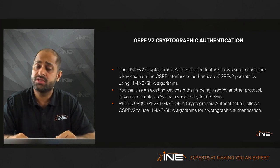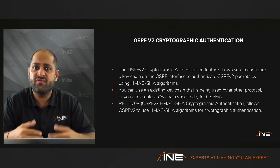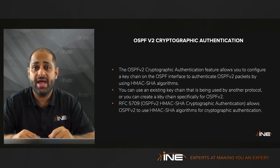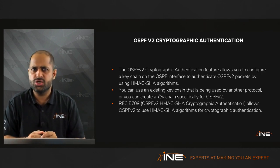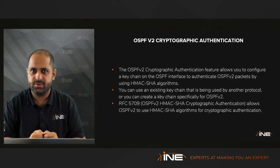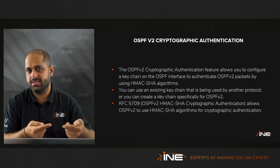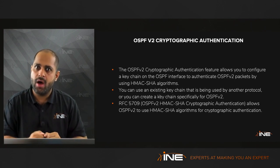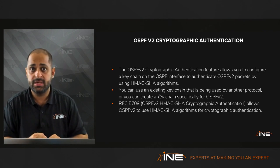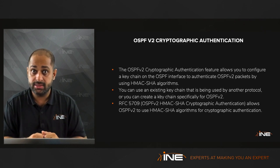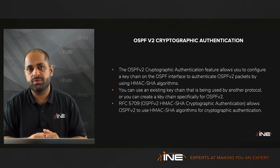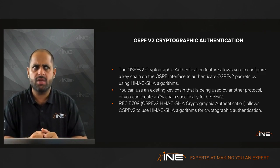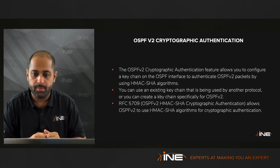OSPF also supports cryptographic authentication. The OSPF version 2 cryptographic authentication feature allows you to configure a key chain on the OSPF interface to authenticate OSPFv2 packets using the HMAC-SHA algorithm. With a static clear text or MD5 password you cannot have multiple passwords, but with a key chain you can do key chain rotation — at a certain time the router stops accepting old passwords and starts accepting new ones. Key chains can also be used with other protocols like RIP and EIGRP.